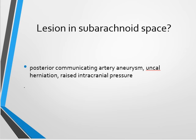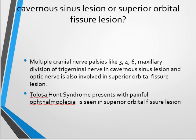The oculomotor nerve has a long course in the subarachnoid space. Once it leaves the midbrain, it is at risk of compression from aneurysms such as the posterior communicating artery, uncal herniation due to hemorrhages, or raised intracranial pressure. After traversing the subarachnoid space, it enters the cavernous sinus, which contains multiple cranial nerves, so lesions there cause multiple cranial nerve palsies.